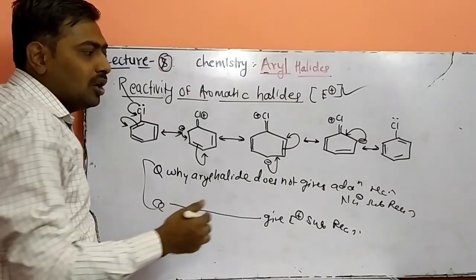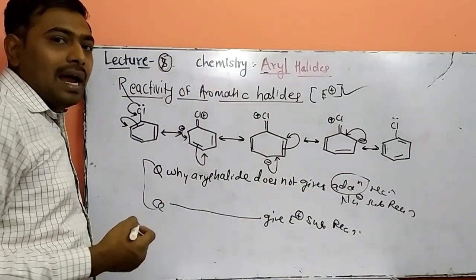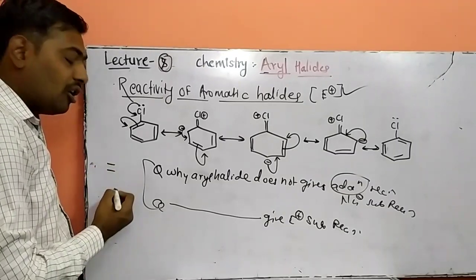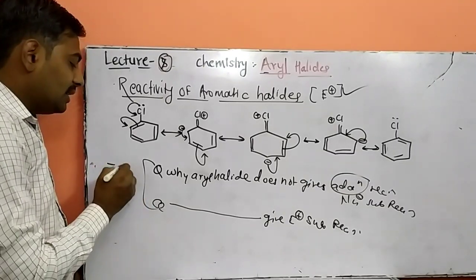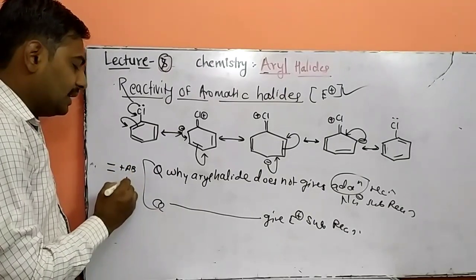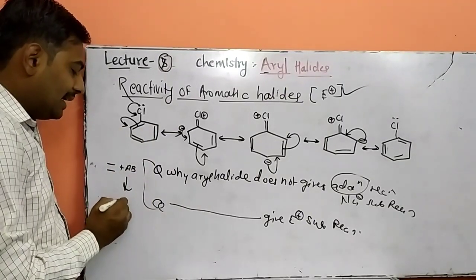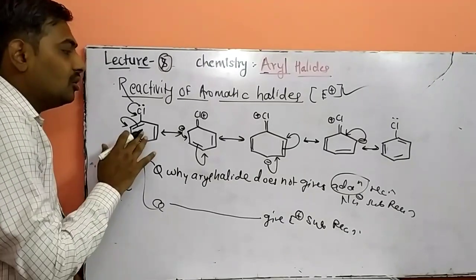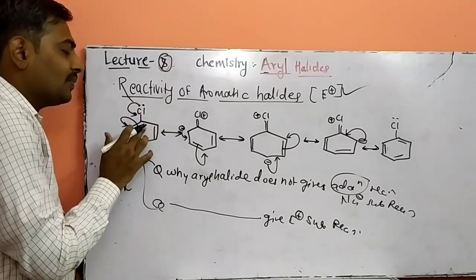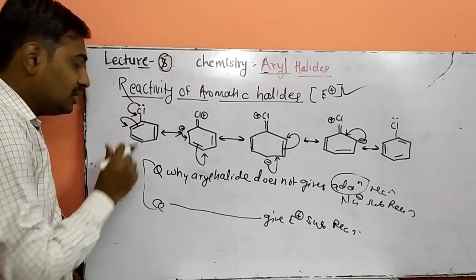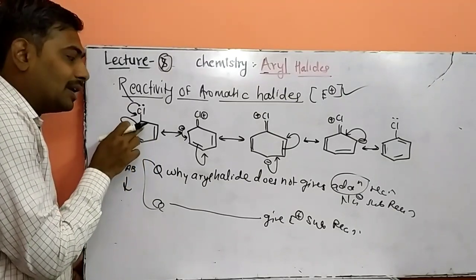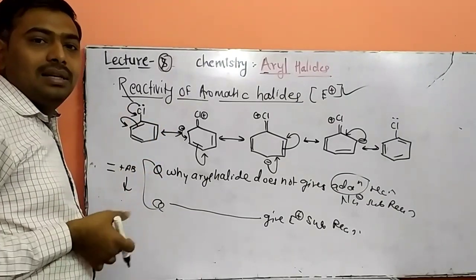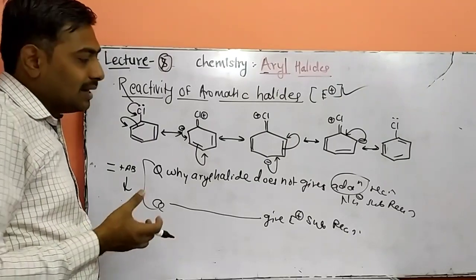Why does benzene not undergo addition type of reaction? Addition reaction means that the double bond or triple bond of a system is exposed to a reagent or group of reagents, and an additive product is obtained while unsaturation in the bond decreases. When we expose the benzene ring to an addition reaction, the double bond character of benzene decreases and the resonance effect gets collapsed. So benzene does not give addition type of reaction.